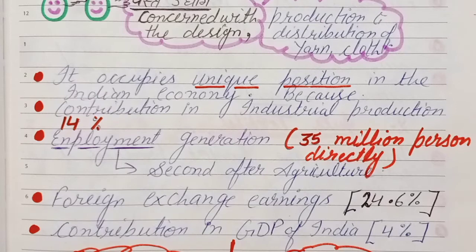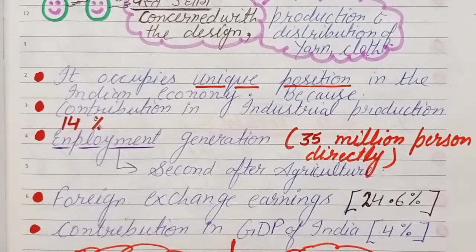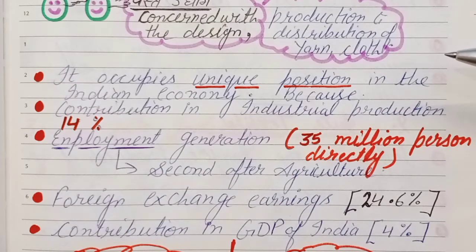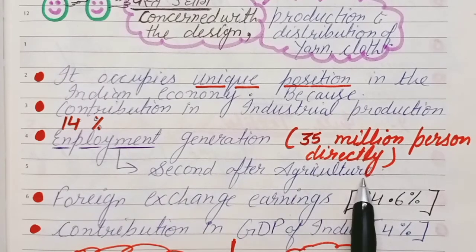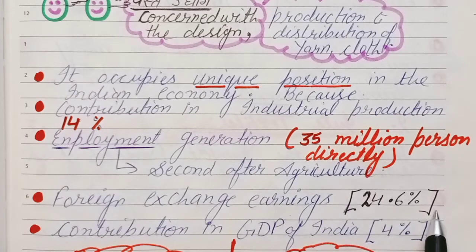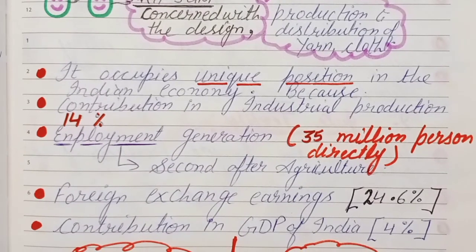A direct exam question is: 'What is the importance of textile industry in the Indian economy?' For this, write these five points — it occupies a unique position; contribution in industrial production is 14%; employment generation is 35 million directly; second after agriculture in employment; foreign exchange contribution is 24.6%; and contribution to GDP of India is 4%.